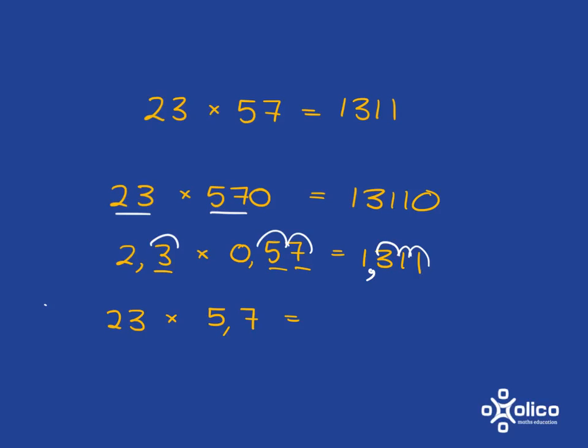And then the last one is even easier, because it's basically, if you just did 23 times 57 to get the answer to this, you would be cheating just one time. So you only need to come back one space with a decimal comma.